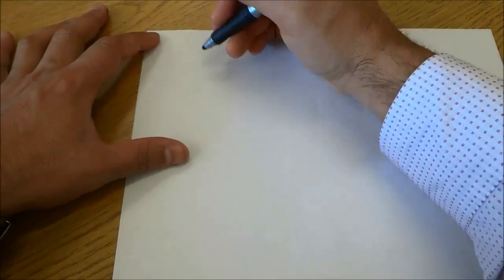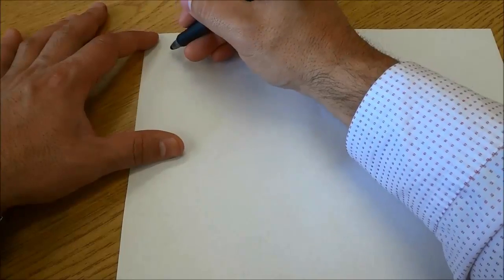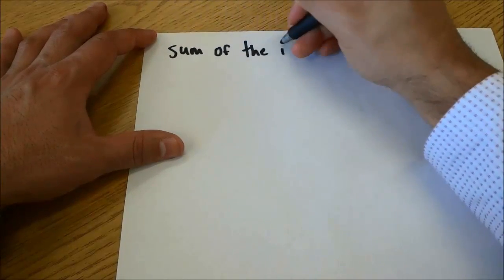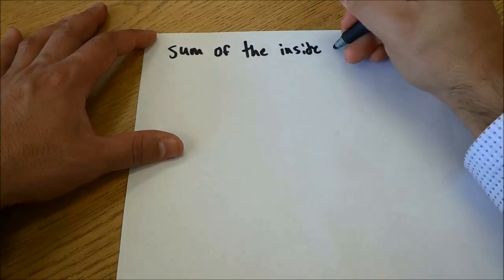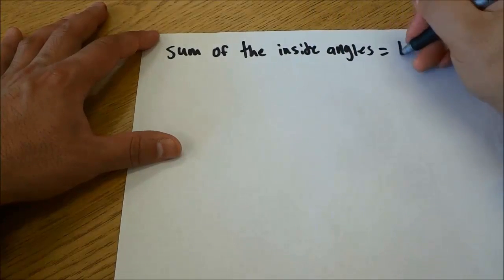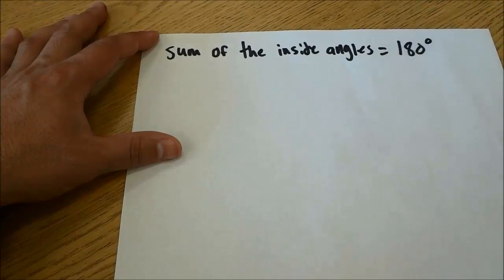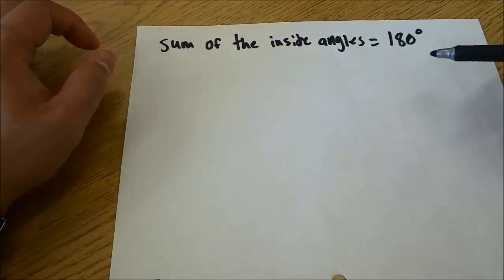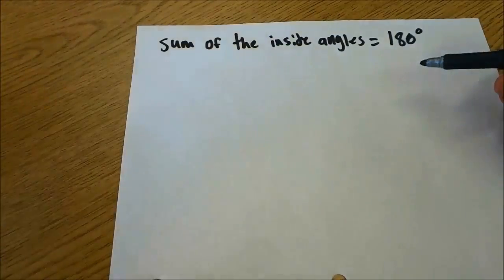Before I give you the examples, one thing needs to be noted: the sum of the inside angles is equal to 180 degrees. So the sum of all three of the inside angles of a triangle is equal to 180 degrees.